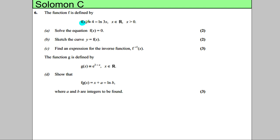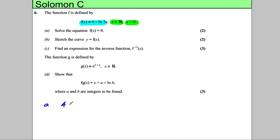We've got a function f, which is 4 subtract the logarithm of 3x, and we're told that x can be a real number and x is bigger than 0. We're asked to solve the equation f of x is equal to 0. So let's write down what we're asked to solve. We are solving 4 subtract the natural logarithm of 3x is equal to 0.